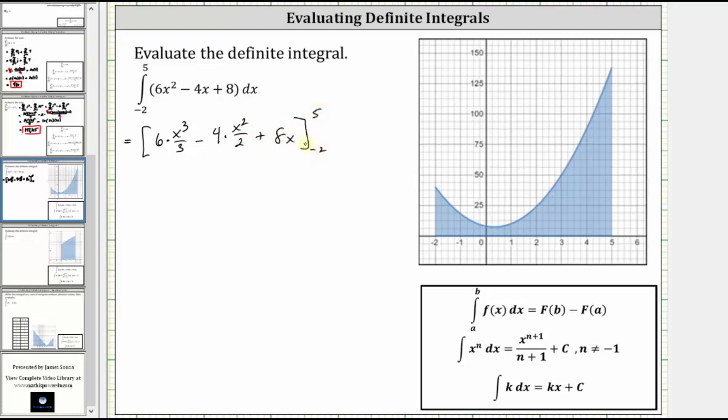And now let's simplify the antiderivative before determining big F of 5 minus big F of negative 2. Well, 6 divided by 3 is equal to 2, and so is 4 divided by 2. The antiderivative simplifies to 2x³ minus 2x² plus 8x.